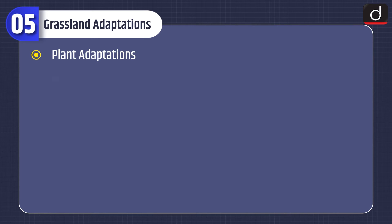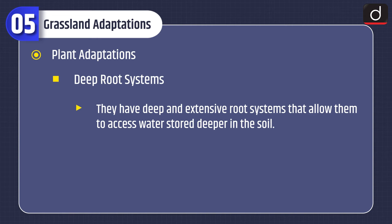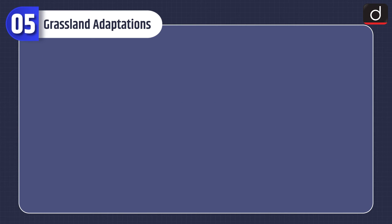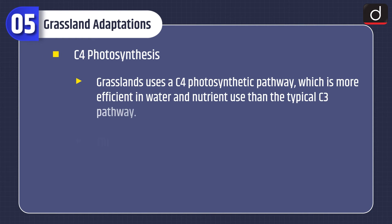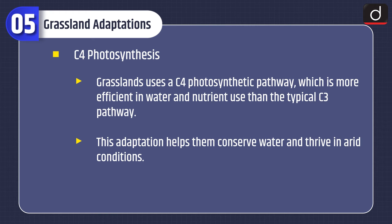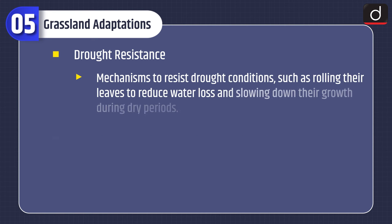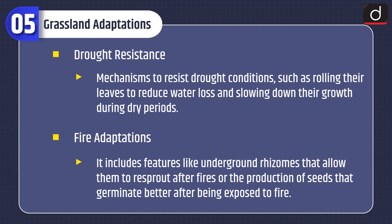Now lastly, let's discuss grassland adaptations. Plant adaptations: deep root systems — plants have deep and extensive root systems that allow them to access water stored deeper in the soil, helping them survive drought and maintain growth. C4 photosynthesis — grasslands use a C4 photosynthetic pathway, which is more efficient in water and nutrient use than the typical C3 pathway, helping them thrive in arid conditions. Drought resistance — mechanisms include rolling leaves to reduce water loss and slowing growth during dry periods. Fire adaptations — features like underground rhizomes allow re-sprouting after fires, and seeds that germinate better after fire exposure.